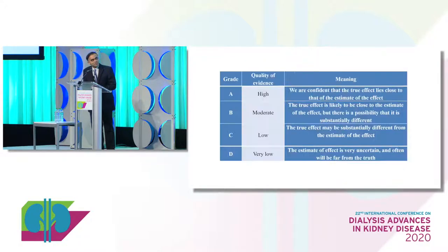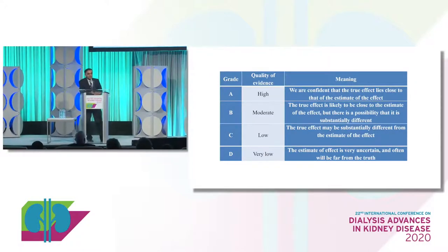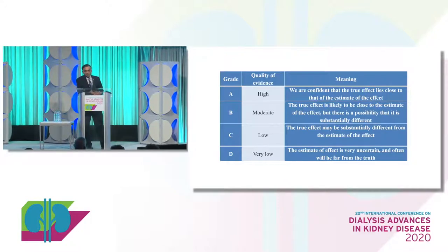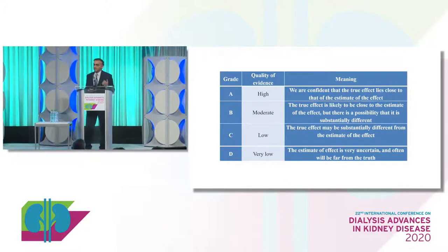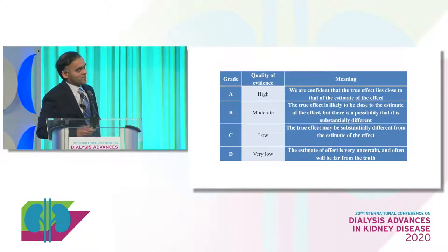The second component of guidelines is the strength of evidence: A, B, C, D. C and D typically means we are extrapolating from non-CKD populations, because we do not have clinical trials testing everything in CKD patients. So we are left with little option but to go back to the general population and extrapolate that evidence. In those scenarios, the true effect may be substantially different from what a dedicated clinical trial might show.